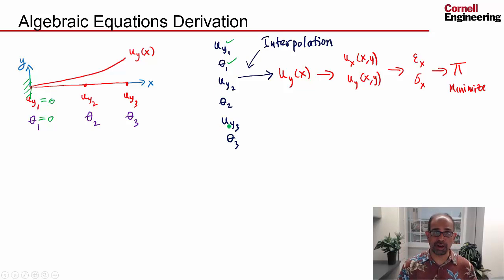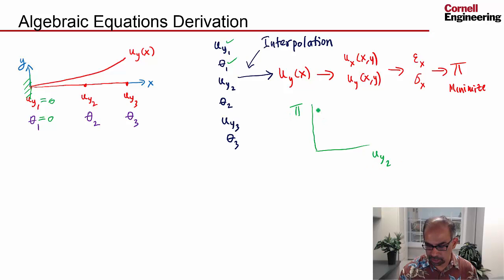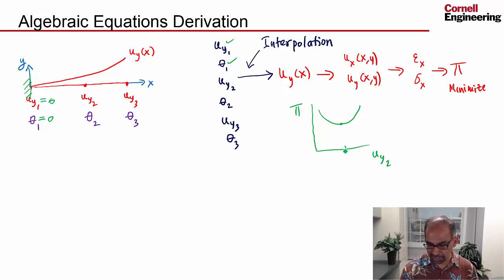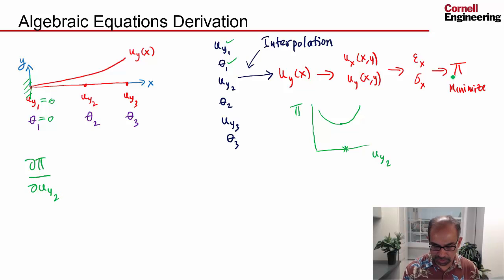Now we are left with four more parameters to determine. As we change Uy2, keeping everything else the same, if we plot the potential energy versus Uy2, it'll have some variation like that. And there is some value of Uy2 where it's minimum. This is the value we want to find. From calculus, we know that we can find that value by setting the derivative of this function with respect to Uy2 equal to zero.